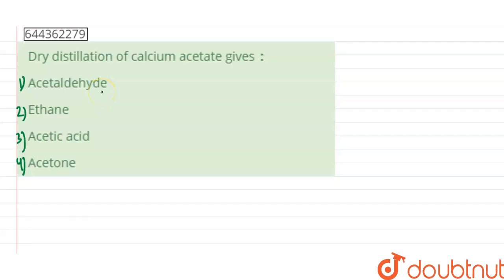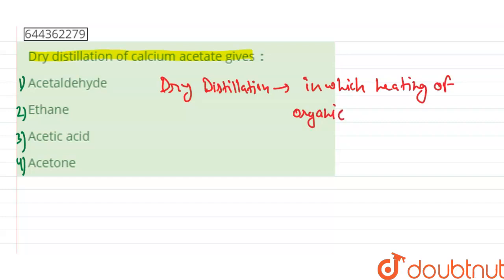Hello guys, the given question says: Dry distillation of calcium acetate gives. Dry distillation is basically a process in which heating of organic solid takes place to produce gaseous product.